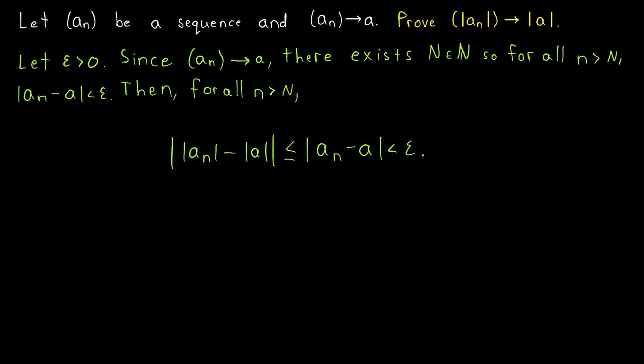Then, concerning our sequence, the absolute value of An, we have that for all terms after the big Nth term, the distance between those terms of the sequence and the absolute value of A is less than or equal to the absolute value of An minus A. Again, that is by the reverse triangle inequality. But then, we already know that this distance is less than epsilon whenever N is greater than big N.